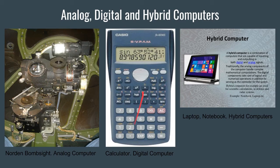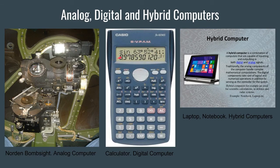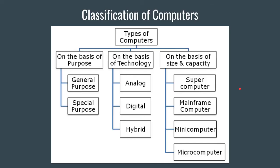A digital computer, like a calculator, will not give any analog values — it always gives digital values. Hybrid computers include notebooks, netbooks, PCs, desktops, and mobiles, which can work on both digital as well as analog signals.